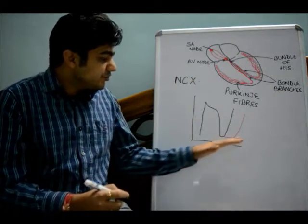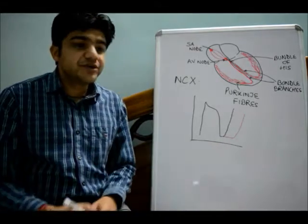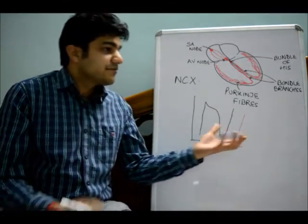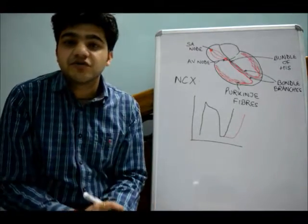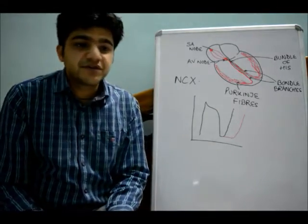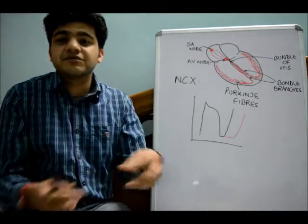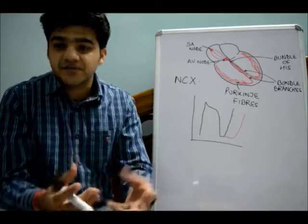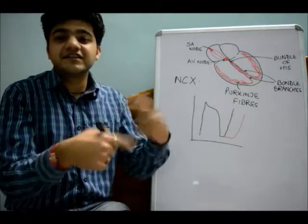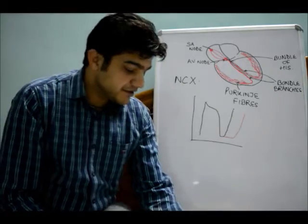The bottom line for DAD is calcium overload, which could be due to heart failure or drugs like digoxin. There can also be spontaneous release of calcium from the sarcoplasmic reticulum into the cell, mostly seen in patients with a mutation in the gene encoding the ryanodine receptors. Those receptors keep releasing calcium into the cytoplasm even without a trigger, leading to activation of NCX and generation of a positive inward potential.